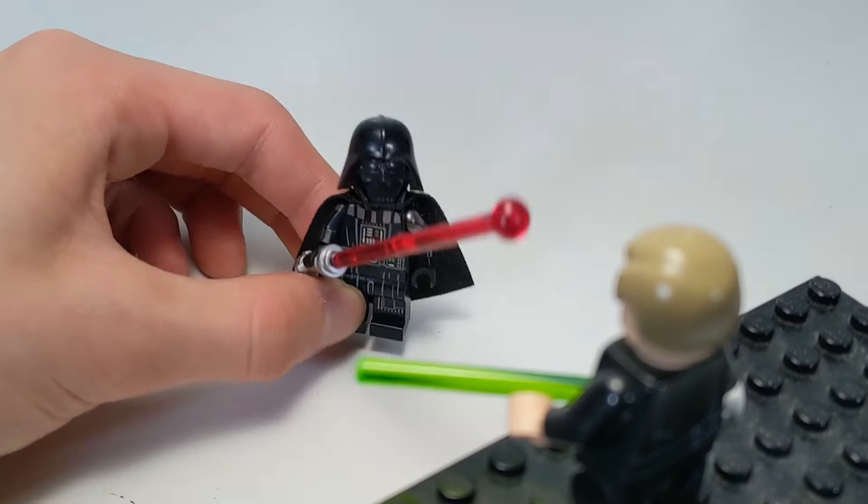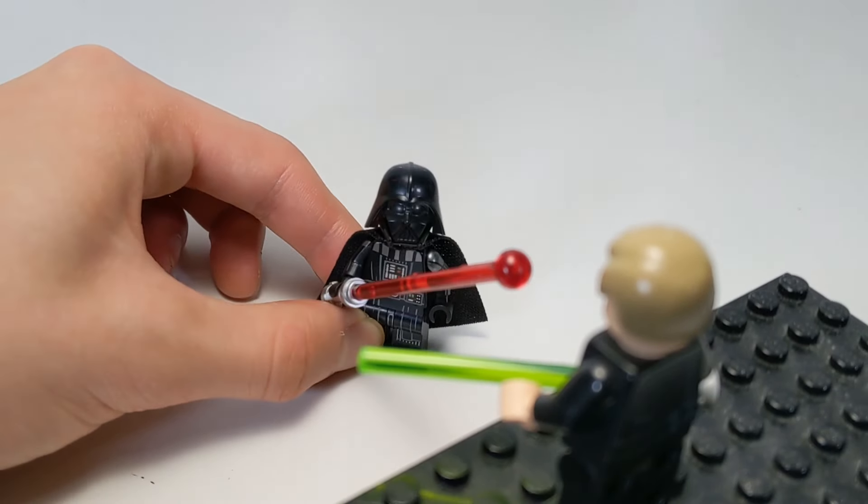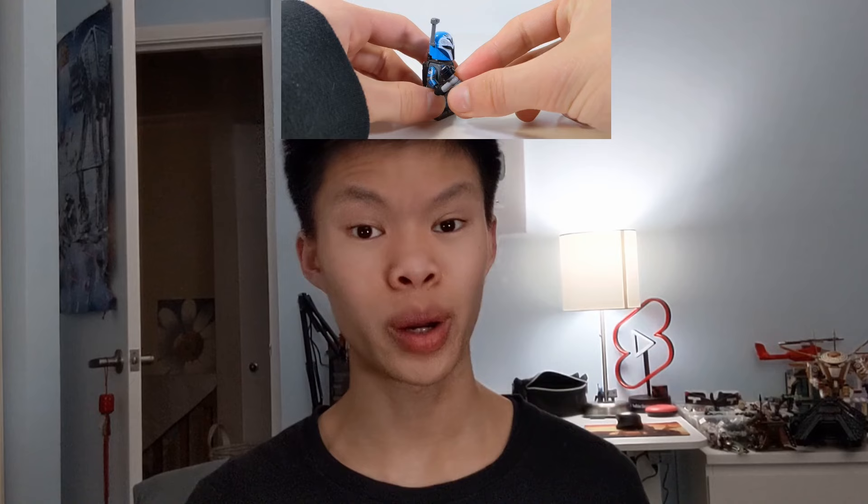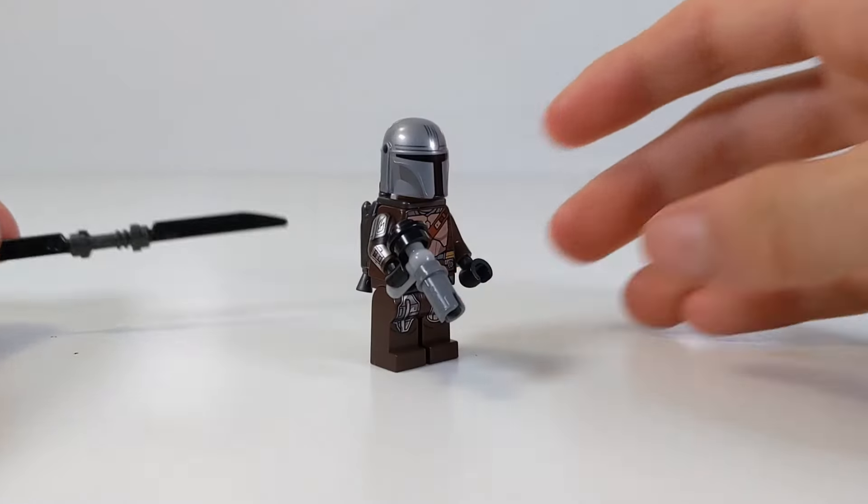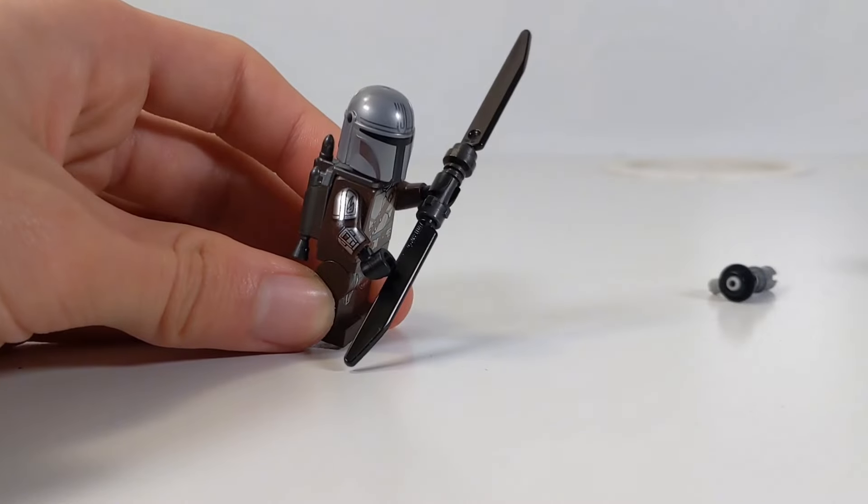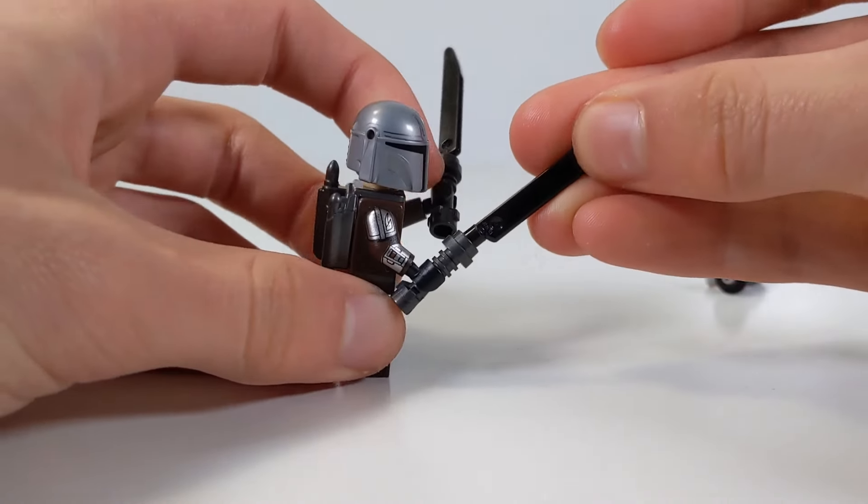LEGO sets often include a lot of spare hoses, technic pins, and studs with holes in them that you can use to build weapons for your Mandalorians. Speaking of Mandalorians, you can use the extra dark saber blade to build a double-sided one or a completely new one, since they always include an extra hilt.